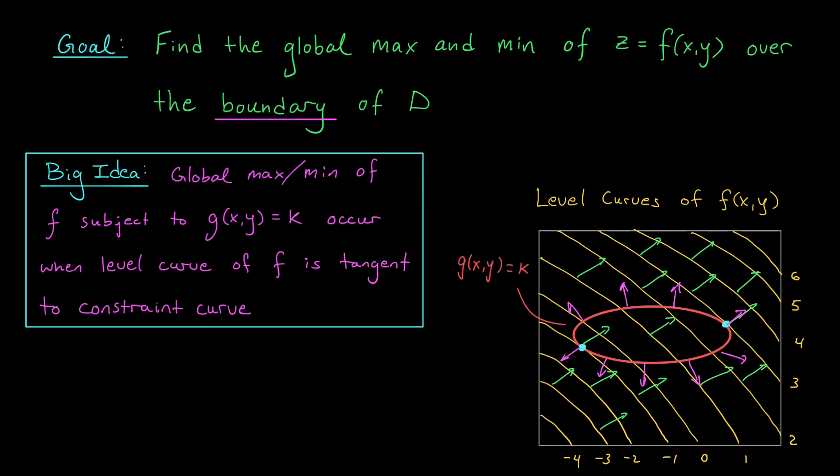Now, do you notice anything interesting happening at our global max or global min? It looks to me like the gradients of f and g at these points are pointing parallel to each other, right? They're either pointing in the exact same direction or the complete opposite direction. This, folks, is the key.